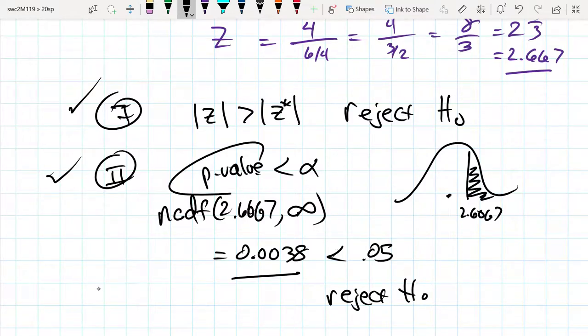These two methods, the p-value method comparing it to the level of significance versus comparing the test statistic to the critical value, those two ways are going to always give us the same result.